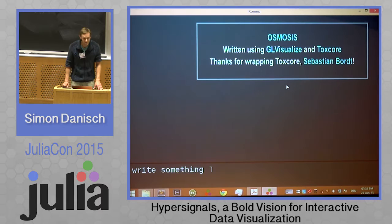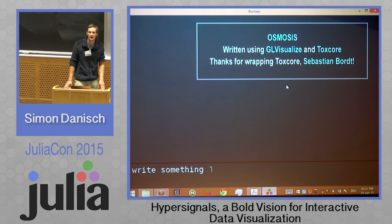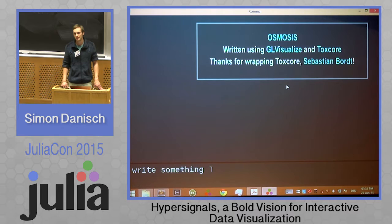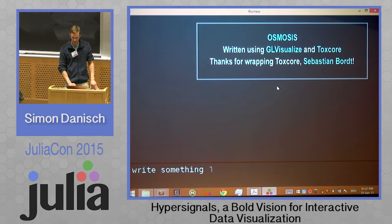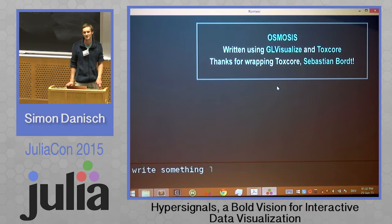So this is Osmosis, a chat client written completely in OpenGL and Julia. It uses ToxCore for communication — a really nice decentralized messenger API — and it uses GeoVisualize, which is my rendering API. I have to thank Sebastian Bort, who wrapped ToxCore. You might be asking why I'm presenting a messenger if it's about scientific visualizations. It's a very easy way to show off the capabilities of GeoVisualize, as I will show you pretty soon.